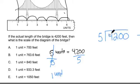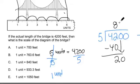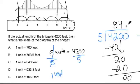I'm doing it now. 5 doesn't go into 4, but it goes into 42 eight times. So 8 times 5 is 40. Subtract them, you get a 2. Drop down one of the zeros—20. 5 goes into 20 four times. 4 times 5 is 20. This is a zero. Drop down zero. It doesn't go in, goes in zero times. Got it. One unit is equal to 840 feet. The answer is C.